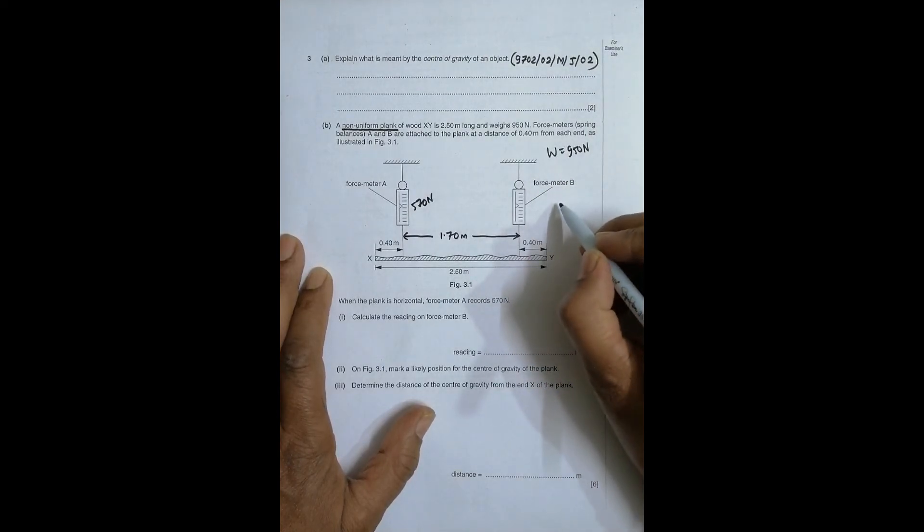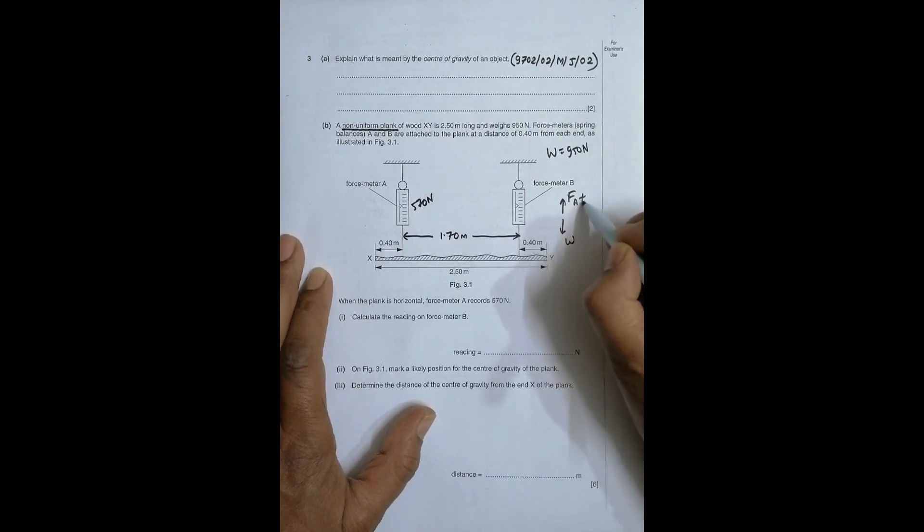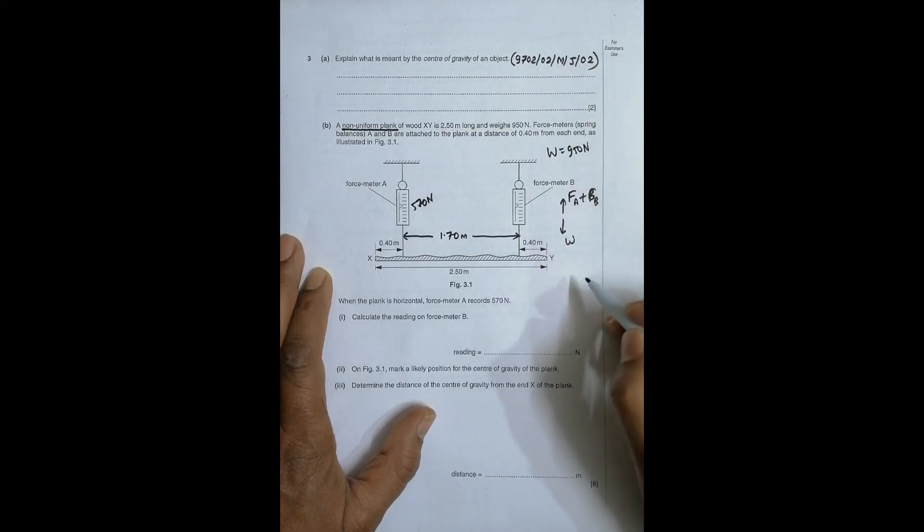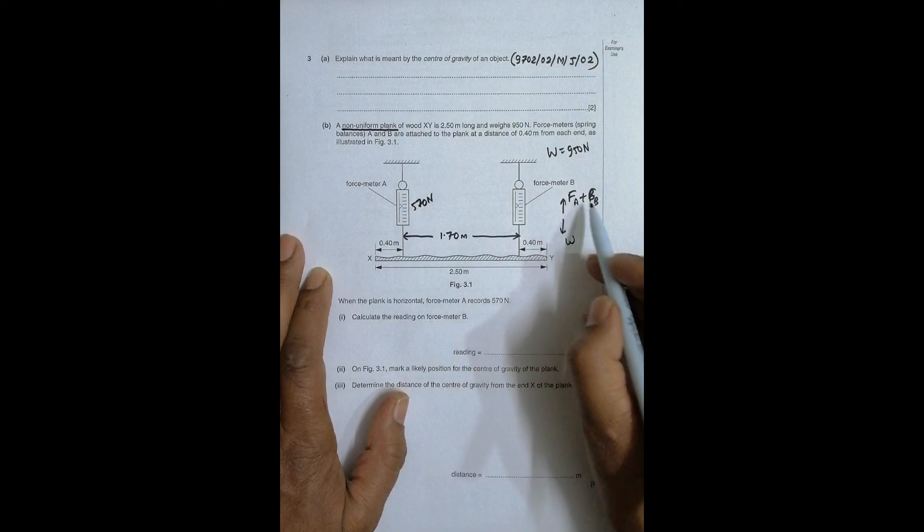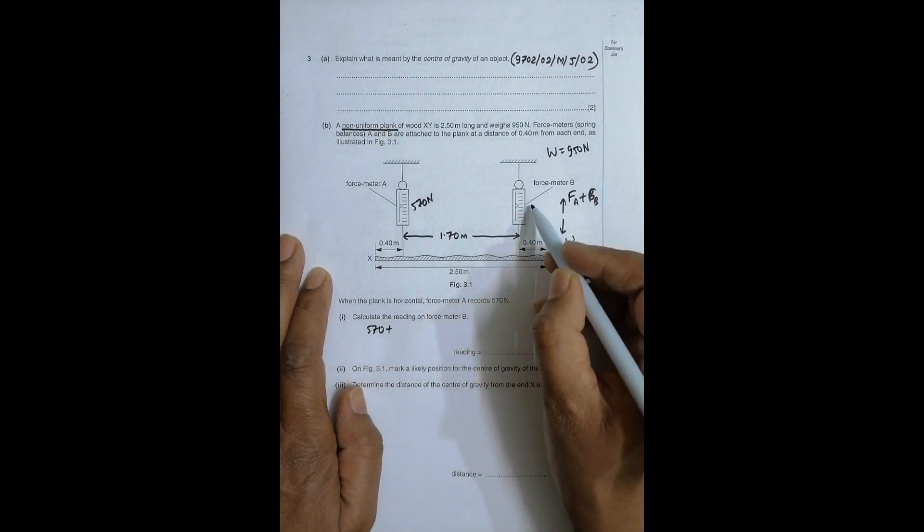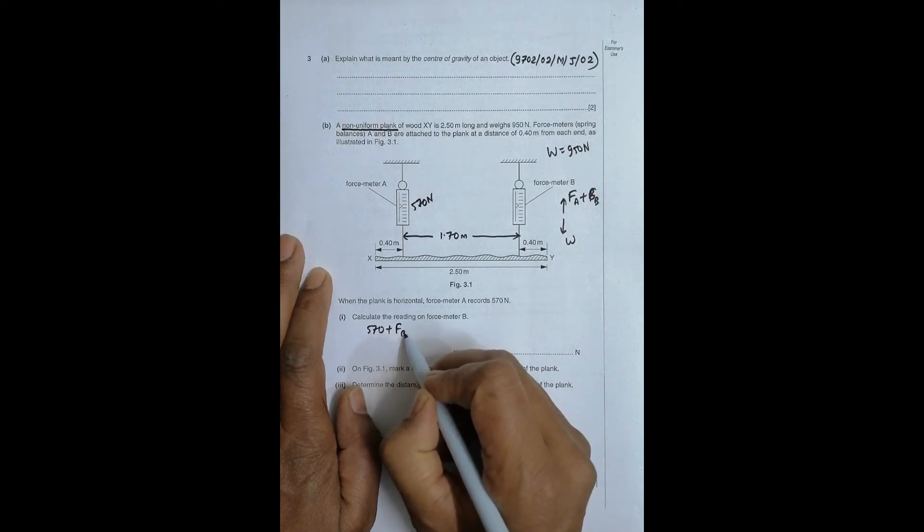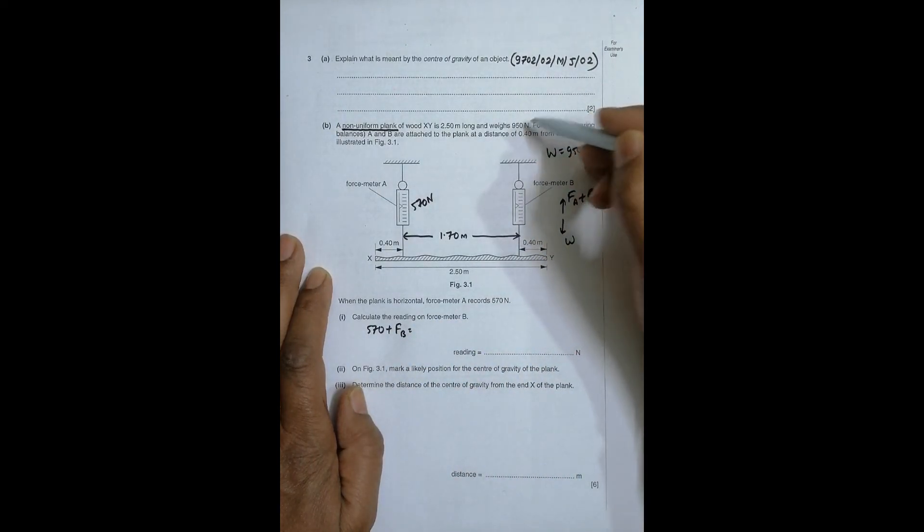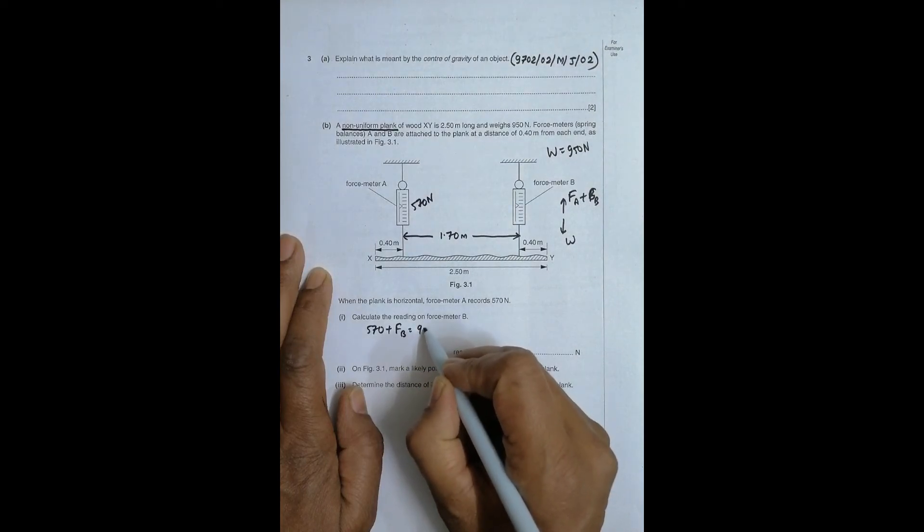When a body is in equilibrium, the total upward force and the total downward force should be equal. The downward force here is the weight, and the upward force is the sum of forces at A plus B. So I must have A records 570, so 570 plus B is equal to the weight which is equal to 950 Newton.